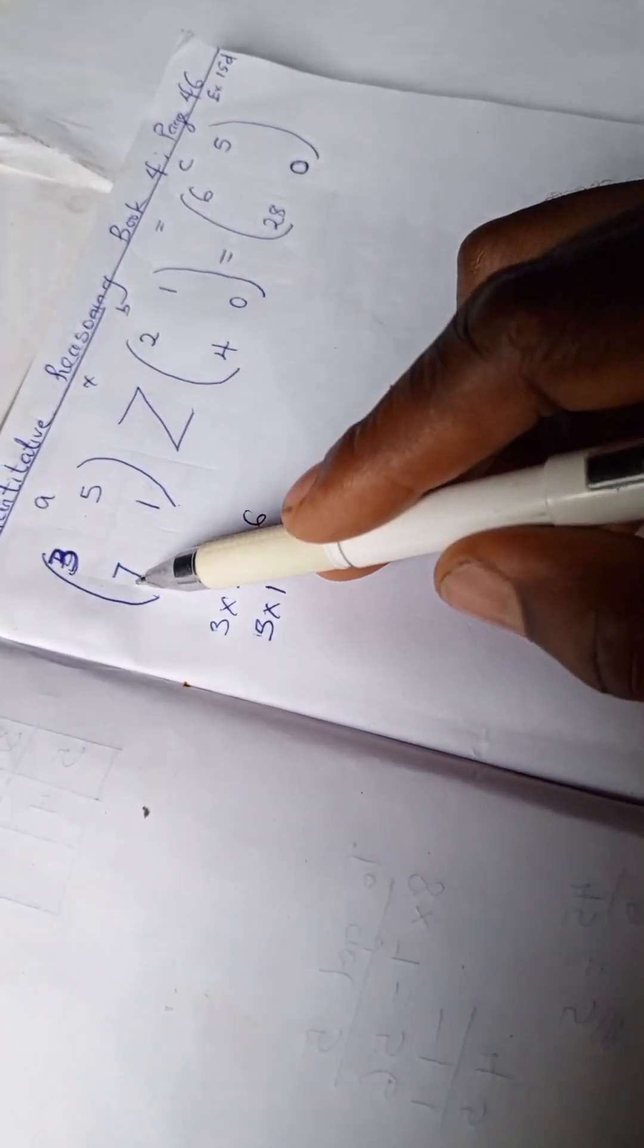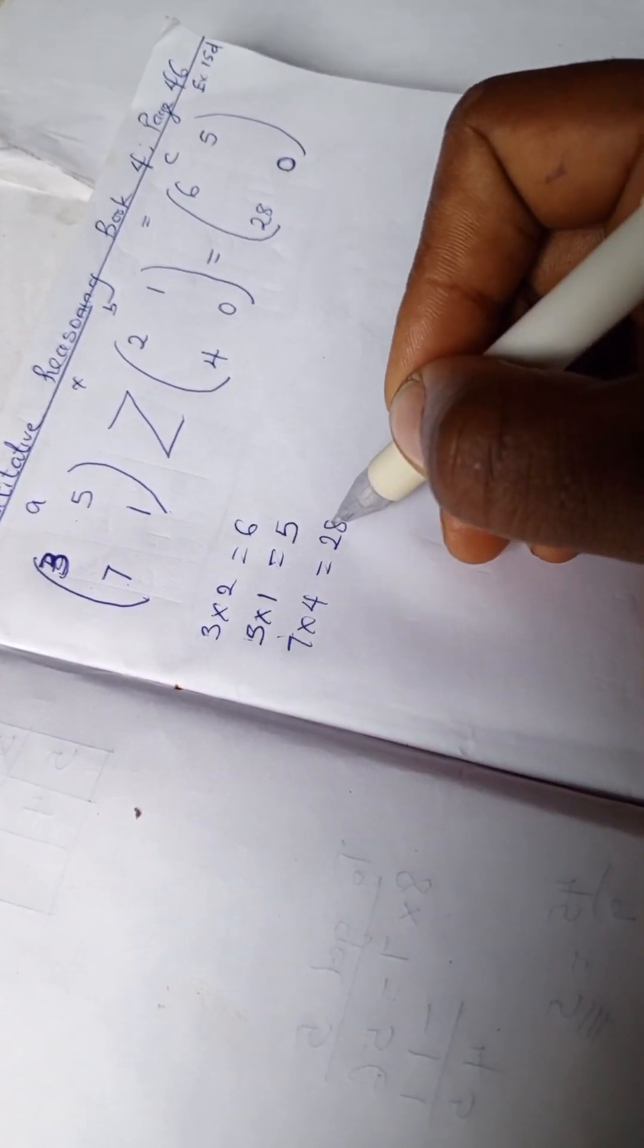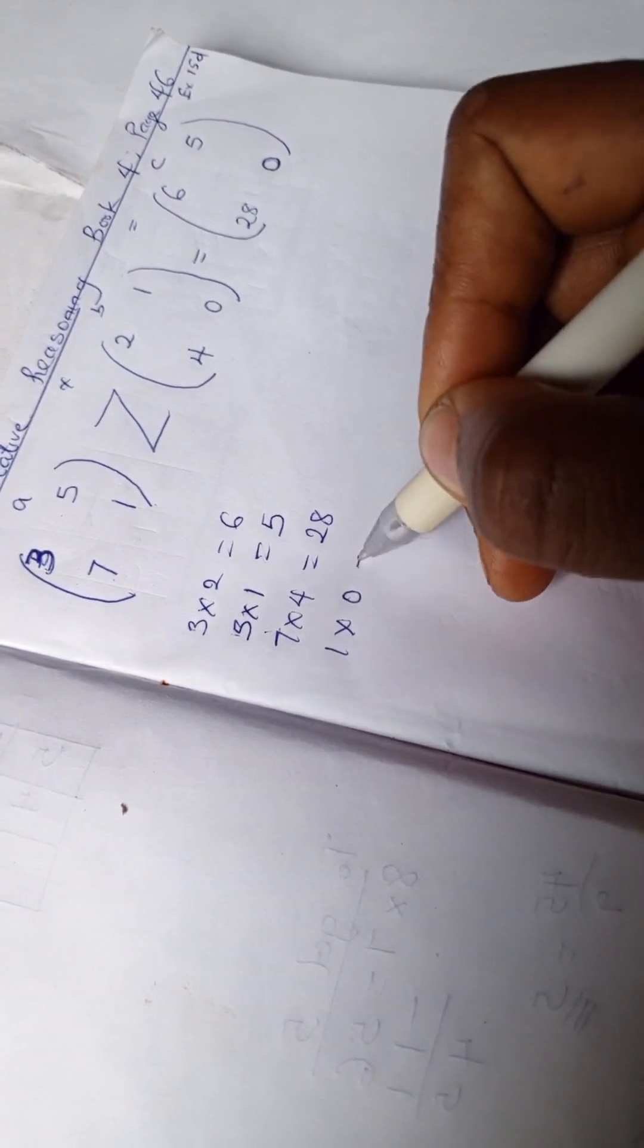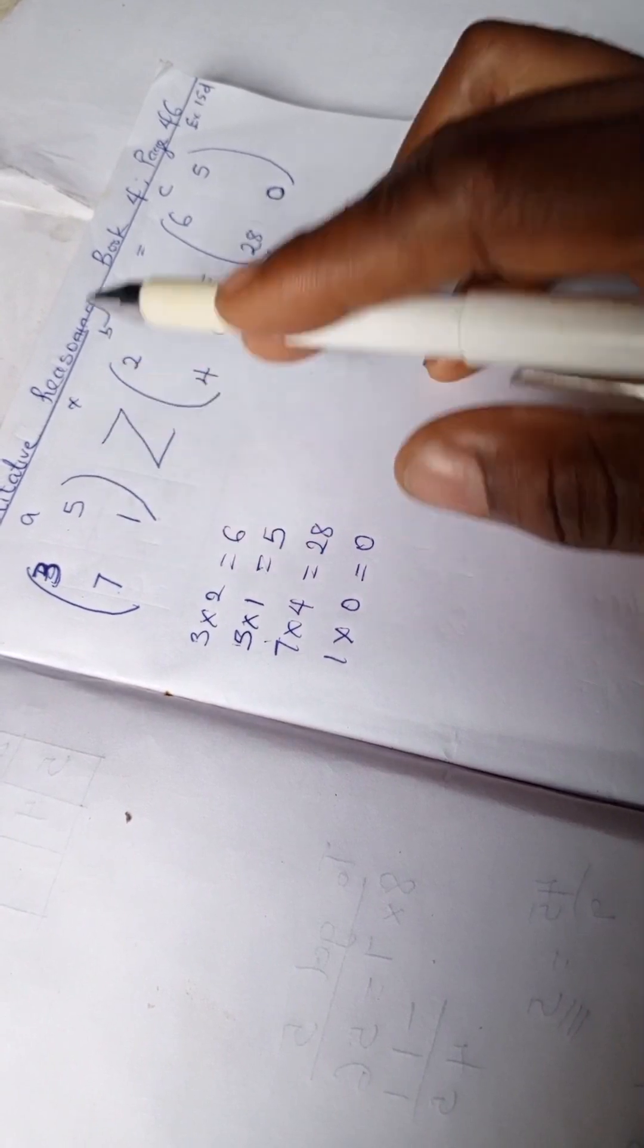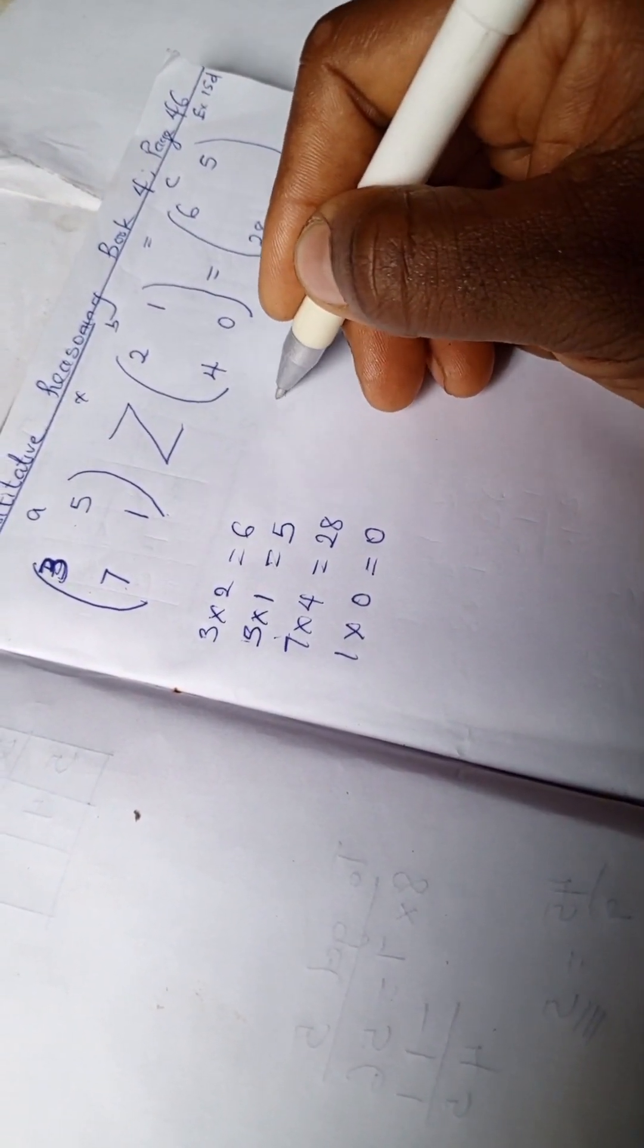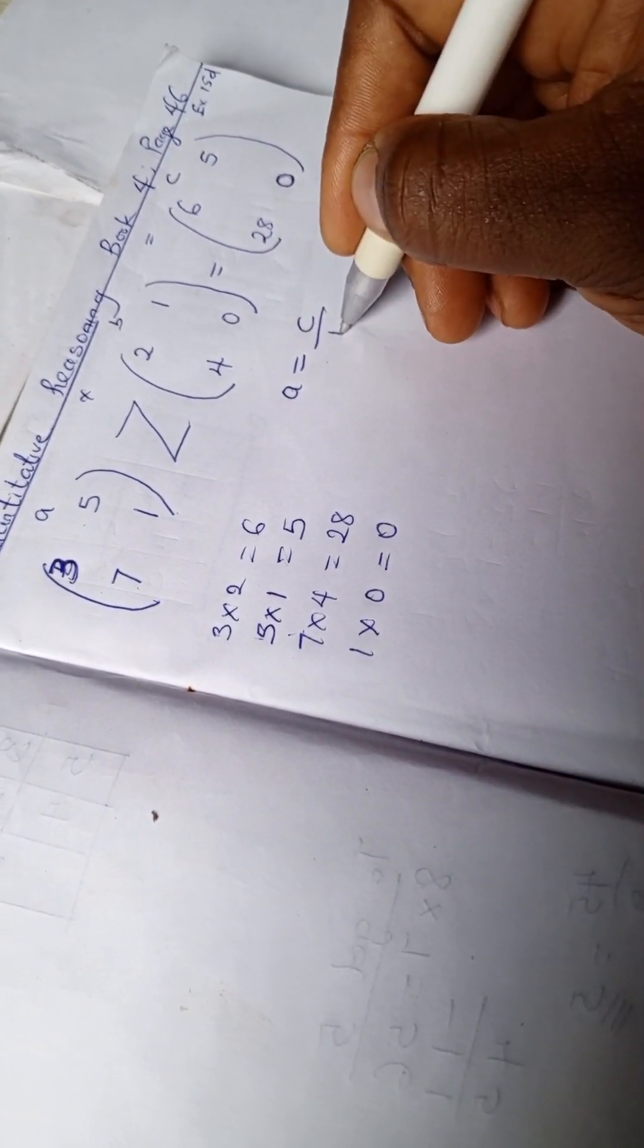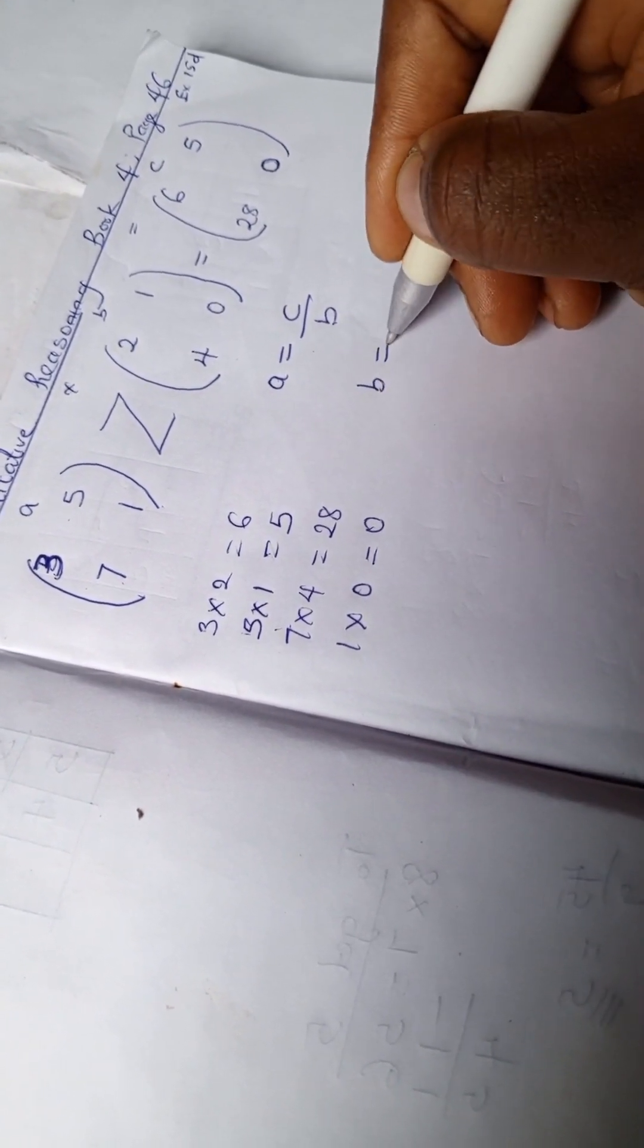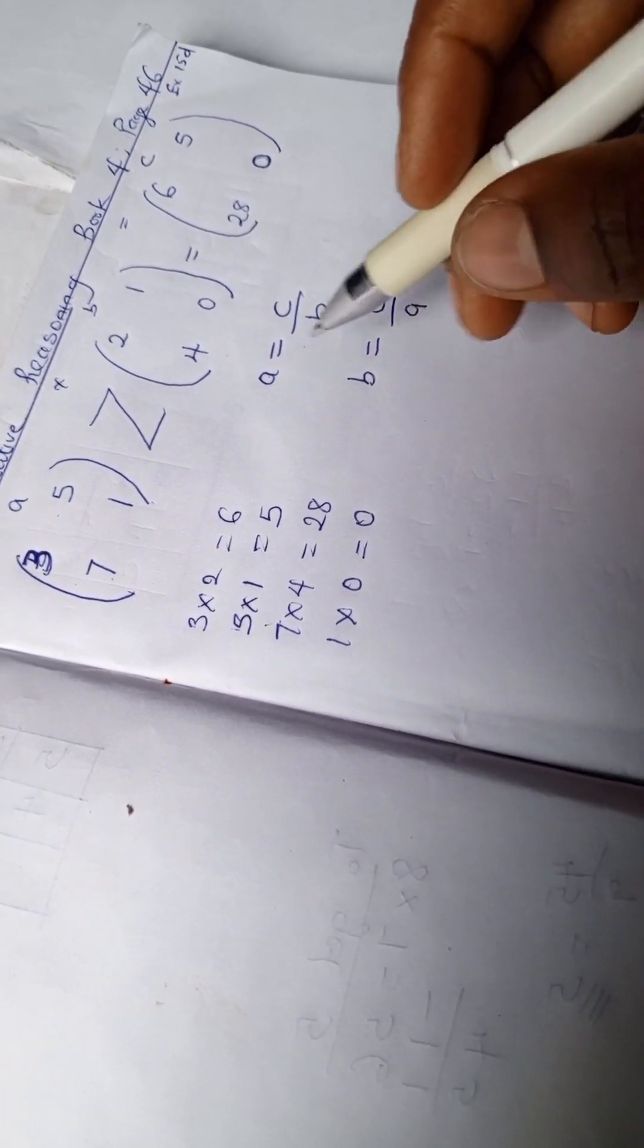We go to the next: 7 times 4 is 28, and 1 times 0 is 0. If we want to get either A or B, to get A you have C divided by B, and to get B you have C divided by A.